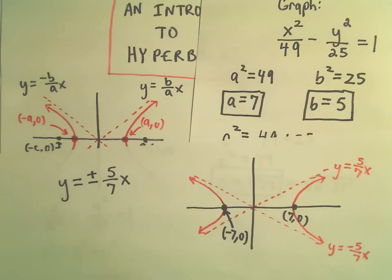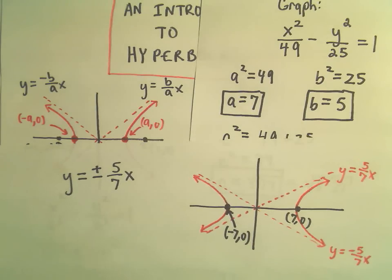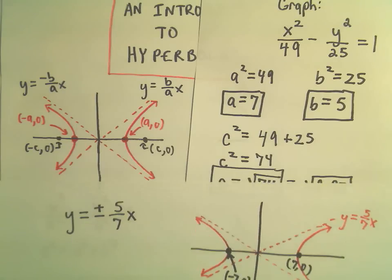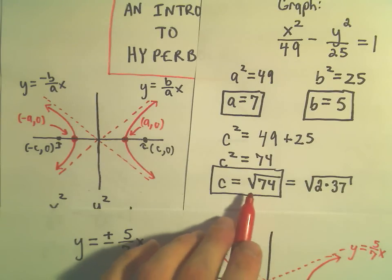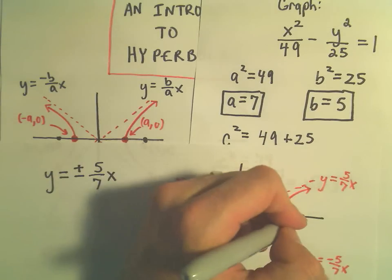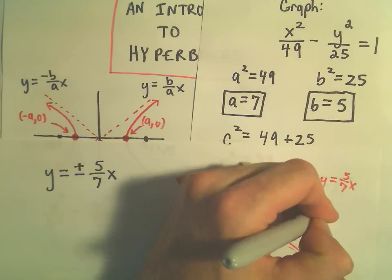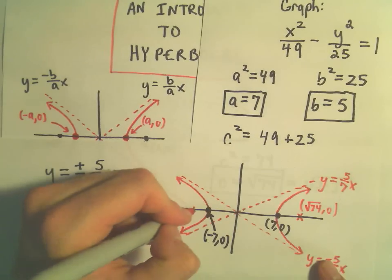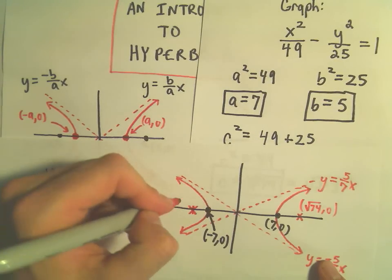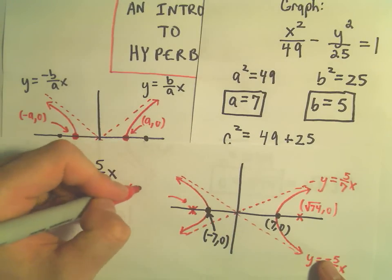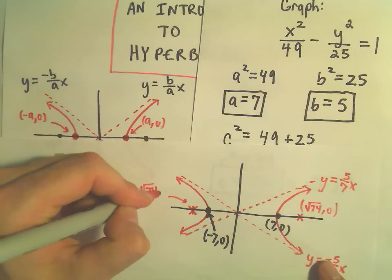So let's see. One other thing. We could always even stick our foci in there. So we said our c value is the square root of 74. So one of the foci would be at positive square root of 74 comma zero. And then the other foci would be sitting there at the point negative square root of 74 comma zero.